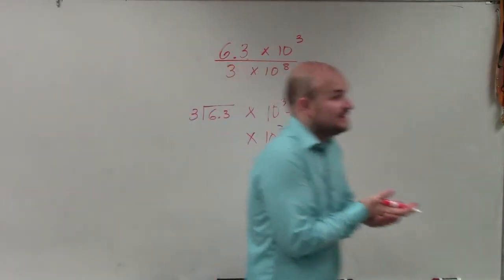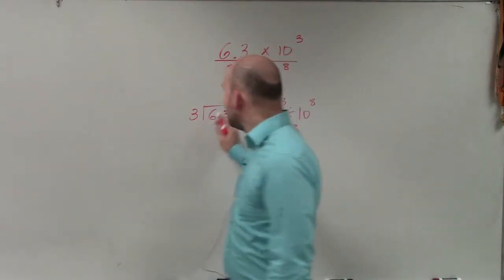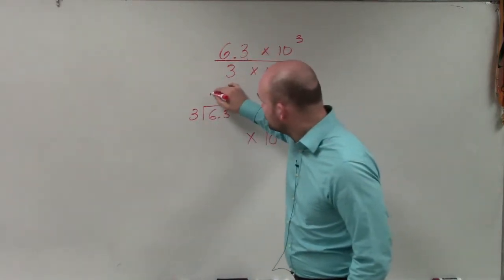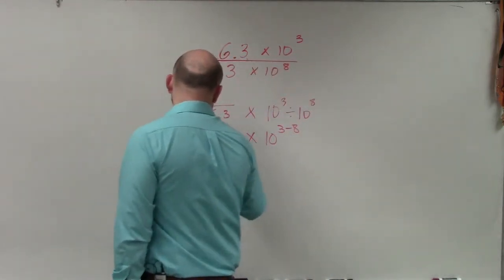And then now we need to divide 3 into 6.3. So if we go back through our long division here, I have 3 divides into 6 twice. 2 times 3 is 6. Subtract my rows. Here I get 0.